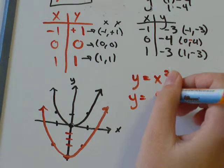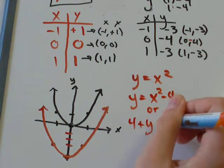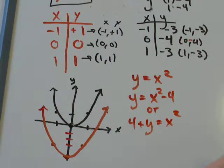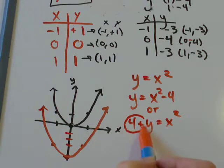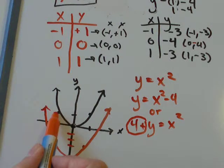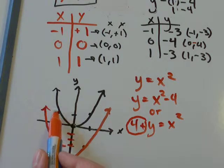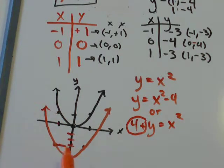Now we've got y equals x squared minus 4, or 4 plus y equals x squared. It means the same thing. So, what did that 4 really do? Well, if you'll notice, this point is 1, 2, 3, 4 units down from the original point we started with. This point is 1, 2, 3, 4 units down from the original point we had up here at 0, 0, and this point is 1, 2, 3, 4 units down from our original point up here.